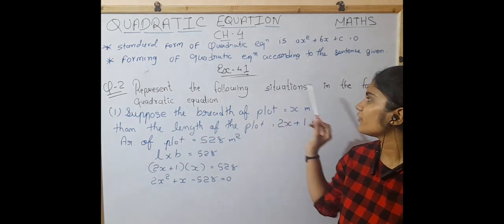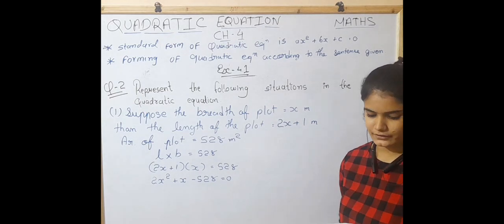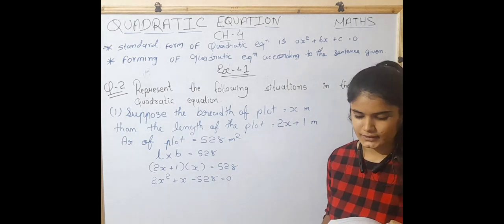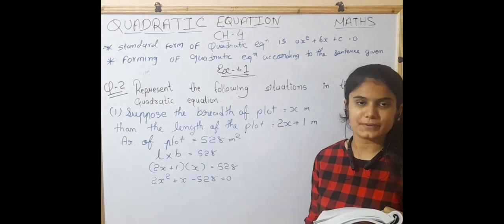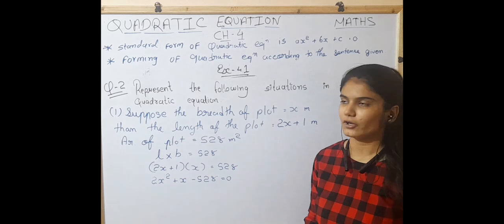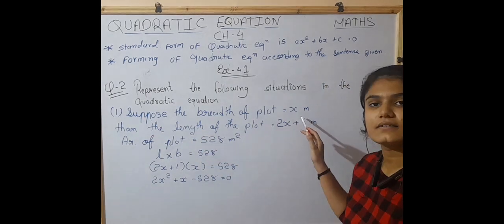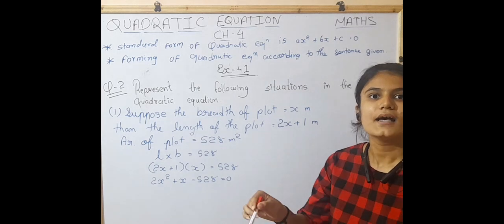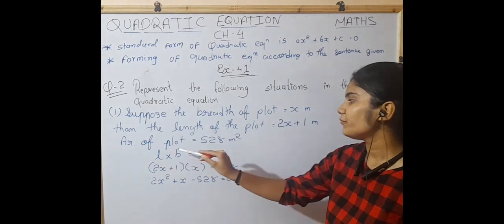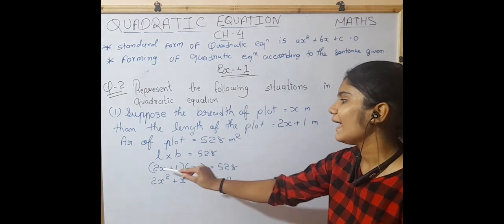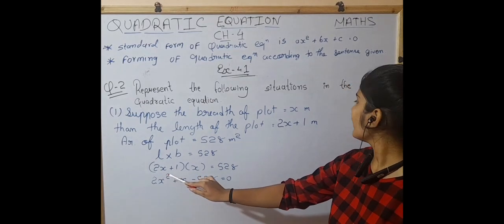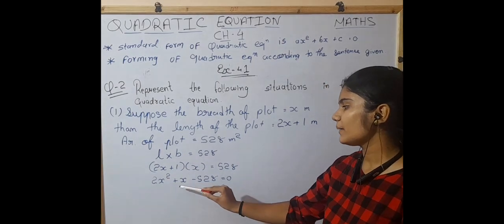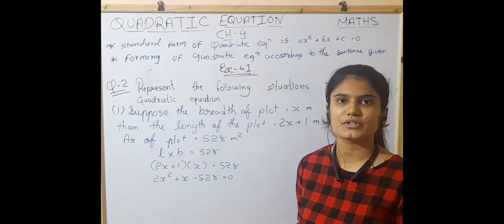Question number 2: Represent the following situations in the form of quadratic equations. Situation 1: The area of a rectangular plot is 528 m². The length of the plot is 1 more than twice its breadth. Suppose the breadth is X meters, then the length is 2X + 1. Since length × breadth = area: (2X + 1) × X = 528, giving 2X² + X - 528 = 0, which is a quadratic equation.